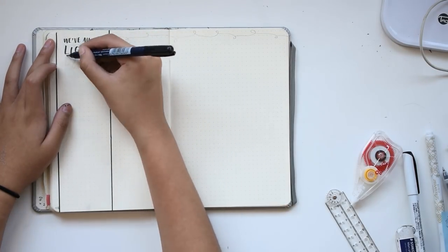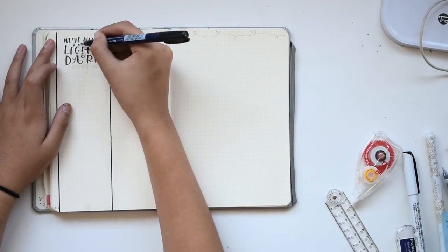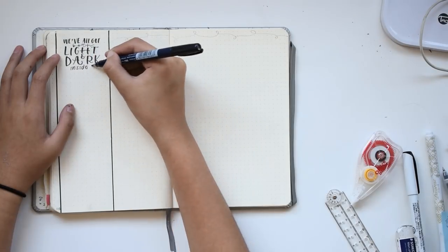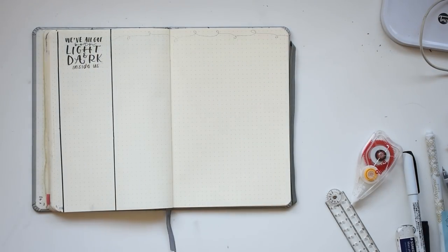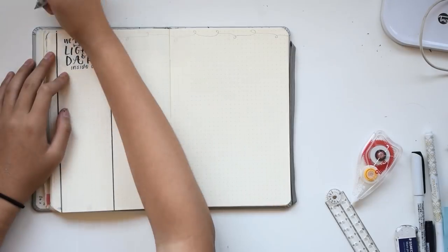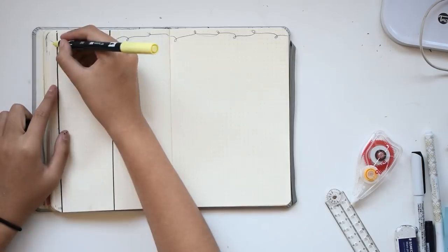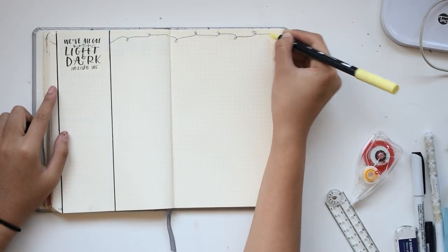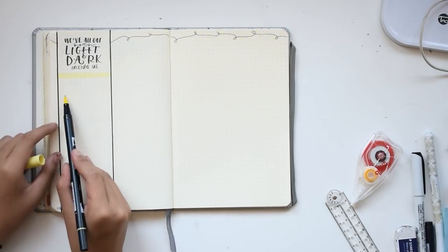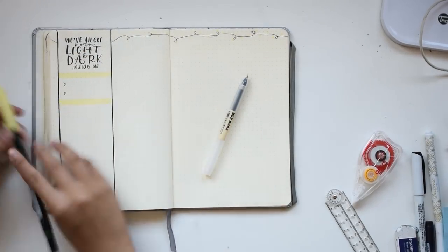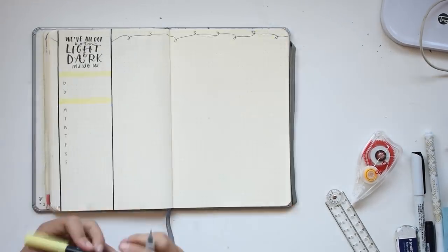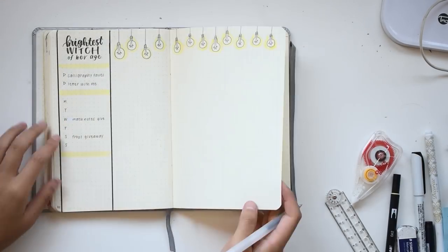And now I'm moving on to the final weekly spread, which features a quote by Sirius Black. I only did the first section because it was a pretty long quote, but the quote goes something like: 'We've all got both light and dark inside us. It's the part we choose to act on that truly shows who we are.' And for this week, again, I'm using that little trail of fairy lights along the top.